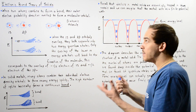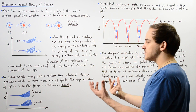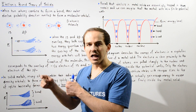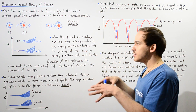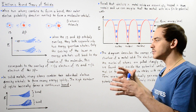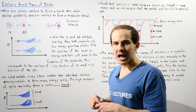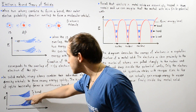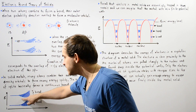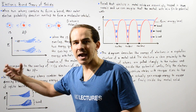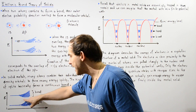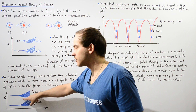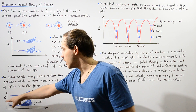This is basically the band theory of solids — it describes the way that individual atoms and electrons within a solid metal interact. The separation between bands is the gap energy, meaning electrons cannot be found within those particular energy regions.